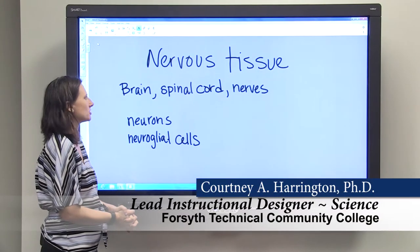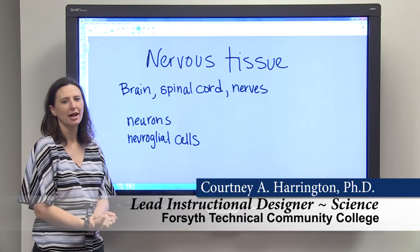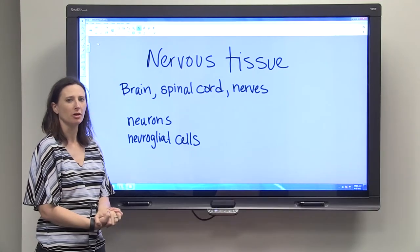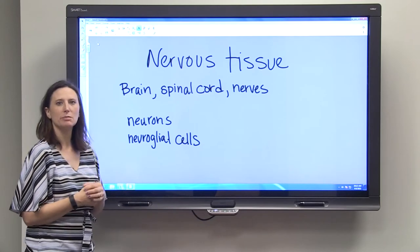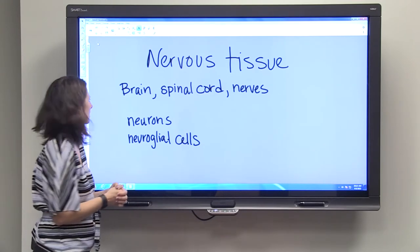Now we're going to talk about nervous tissue. Nervous tissue is found in your brain, in your spinal cord, and in your nerves. Nervous tissue is what sends impulses throughout your body to control your muscles.